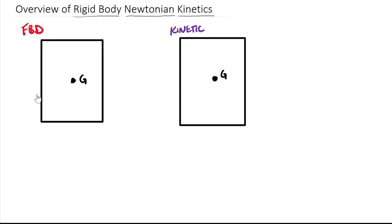We can add some forces to the free body diagram — these are arbitrary. There could be a weight force, other forces like F1 and F2, and couples like C1. Just a whole series of different forces, the same kinds we could have in statics or on particles. Unlike particles where all forces are applied to one point, on a rigid body they can be spread out.